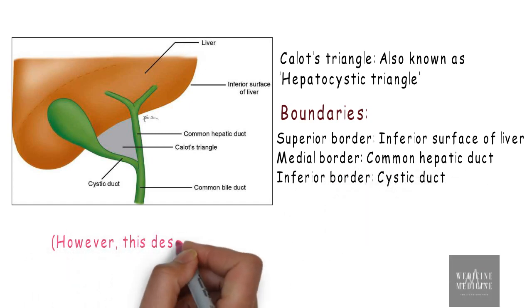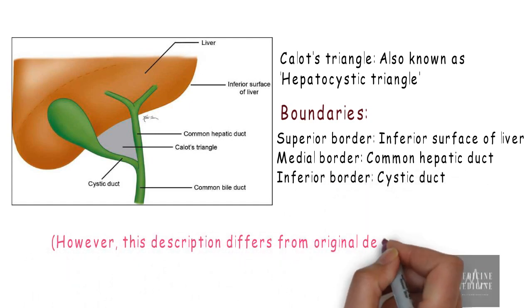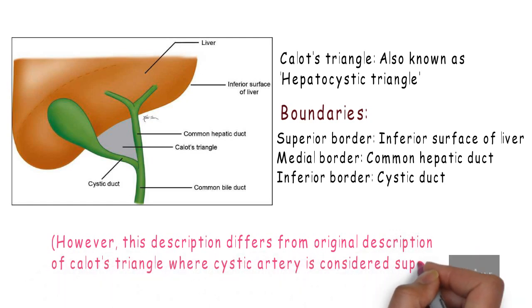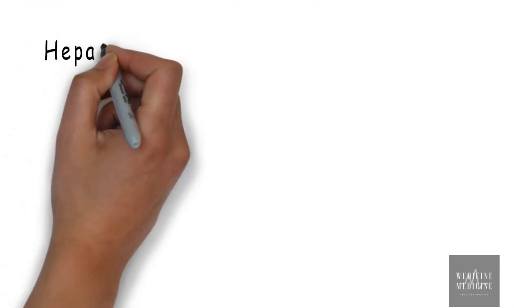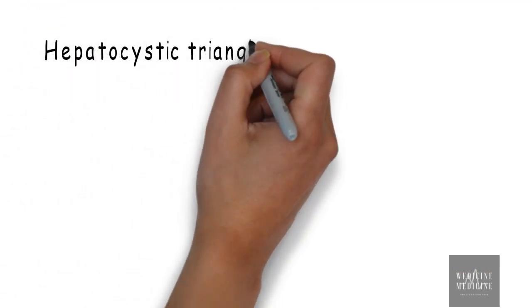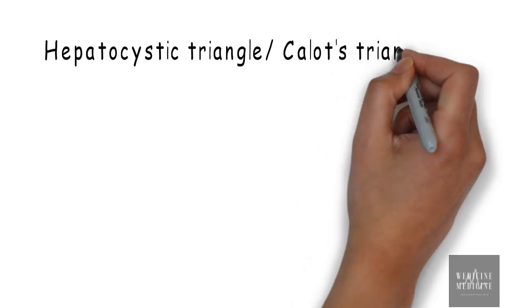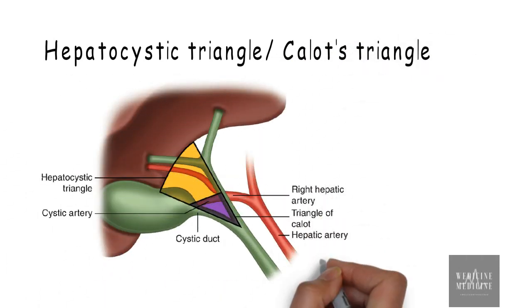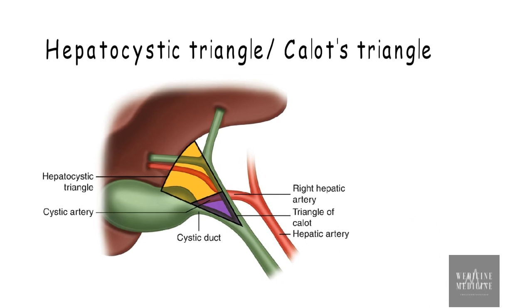This description slightly differs from the original one where cystic artery is considered as superior border of Calot's triangle. Let's clear our doubts about hepatocystic triangle or Calot's triangle. In the figure, you can see hepatocystic triangle enclosing Calot's triangle with cystic artery as superior border of Calot's triangle.